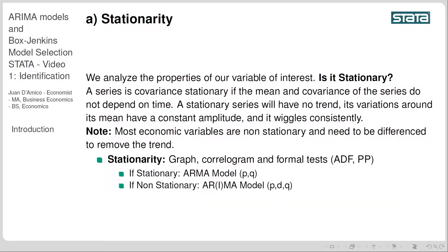Let's start then with stationarity. We're going to analyze the properties of our variable of interest and ask: is this variable stationary? A series is covariance stationary if the mean and the covariance of the series do not depend on time. A stationary series will have no trend, its variations around its mean have a constant amplitude, and it wiggles consistently. As a note, most economic variables are non-stationary and need to be differenced to remove the trend.